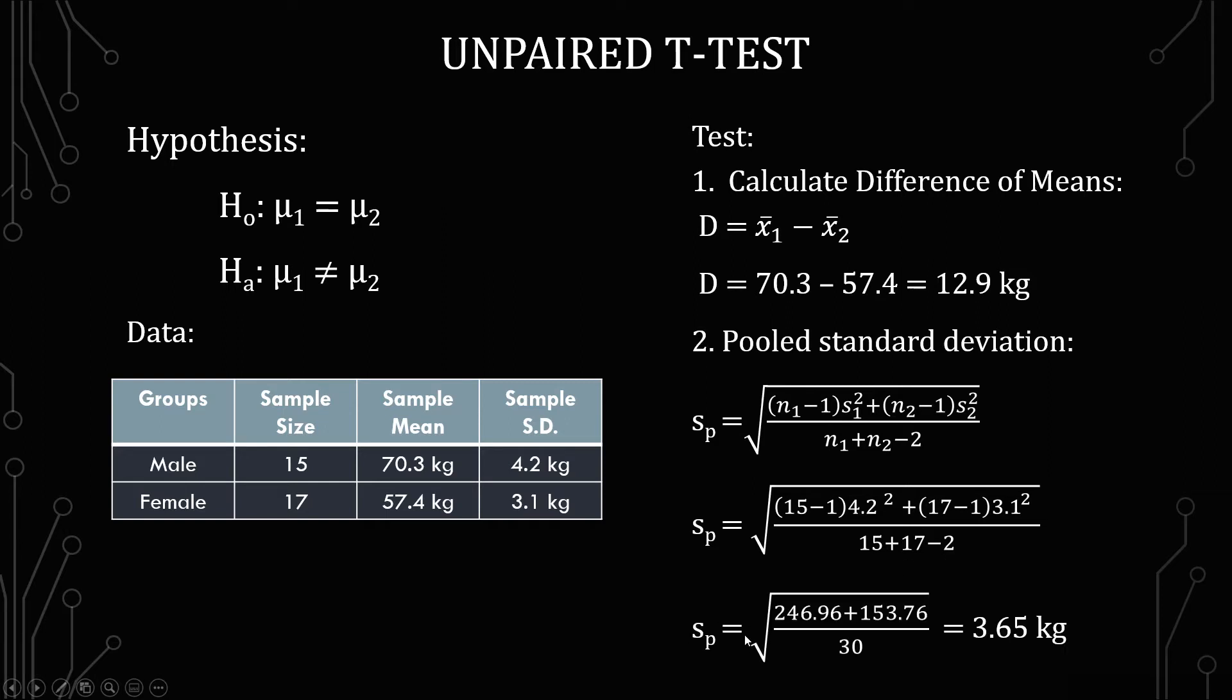And this is what you get in terms of the calculation and we end with 3.65 kilograms as our pooled standard deviation.